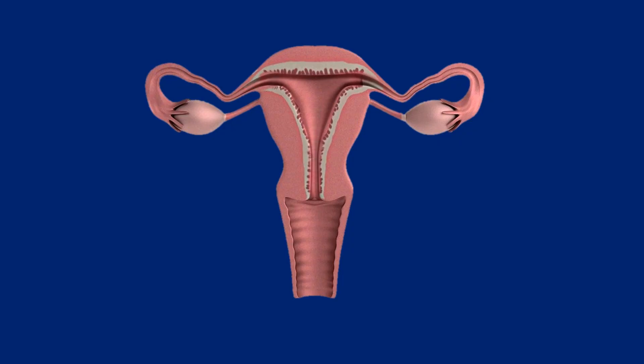Now let's understand the secret of the formation of life. The ovum or egg cell is produced in one of the ovaries. During copulation, the sperm enters the vagina. Due to the acidic environment of the vagina, few of the sperms get killed, and the remaining sperm enter the lower part of the uterus, that is the cervix.